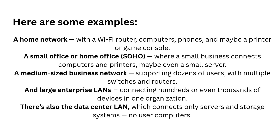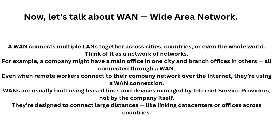Now let's move to WAN — Wide Area Network. Unlike a LAN, a WAN covers a much larger area, even across cities or countries. You can think of a WAN as a network of networks. For example, when a company has a main office in one city and a branch office in another city, their LANs are connected together using a WAN.